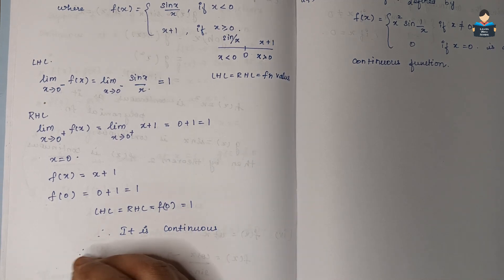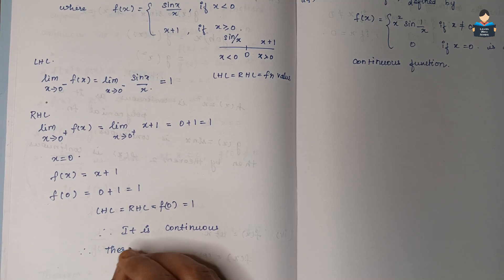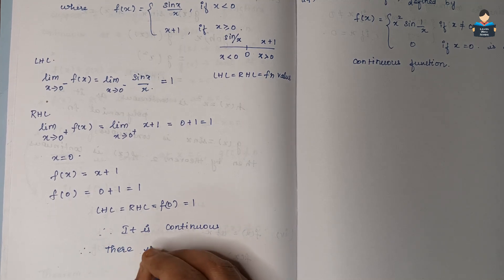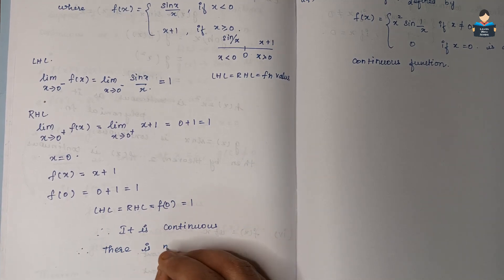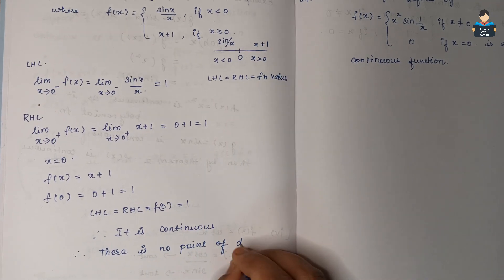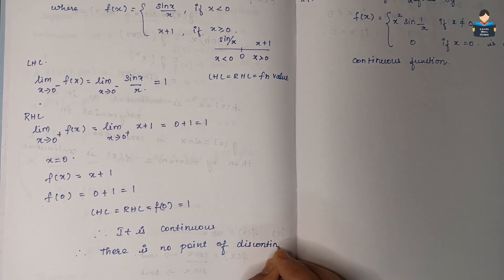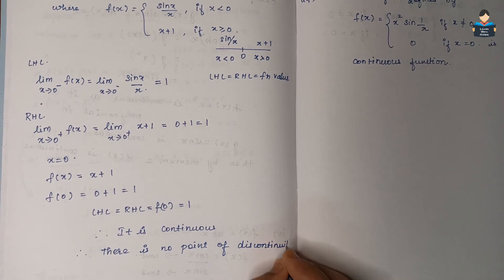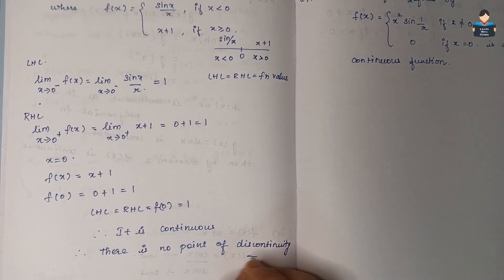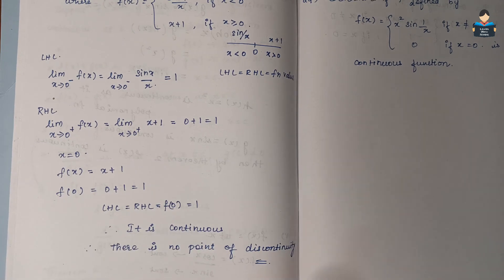Since LHL = RHL = f(0) = 1, the function is continuous at x = 0. Therefore, there is no point of discontinuity. That is the answer for Question 23.